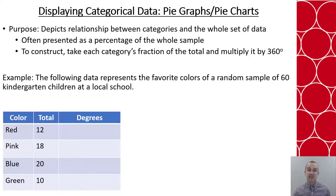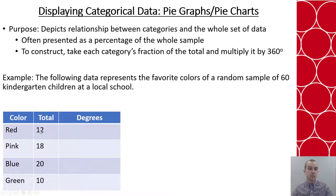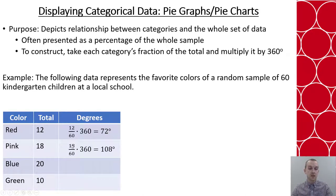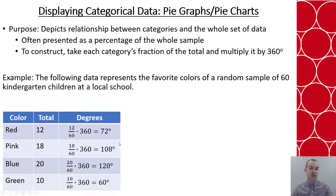Say we have 60 kindergarten children given this random sample with four colors, and we have numbers of 12, 18, 20, and 10. If we need to create the degrees, we know there are 60 total. We take the number favoring red, divide by 60, and multiply by 360 degrees — that slice would be 72 degrees. For pink: divide by 60, multiply by 360 — that is 108 degrees. Blue would be 120 degrees using the same method, and green would be 60 degrees. Adding all four values gives 360 degrees.